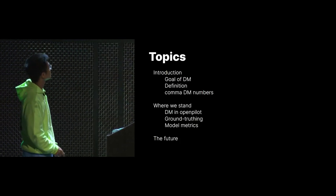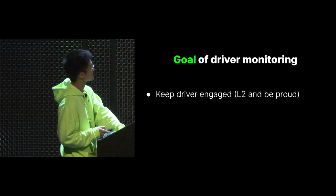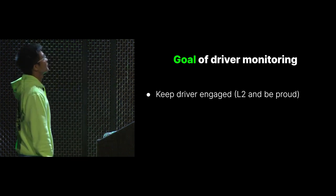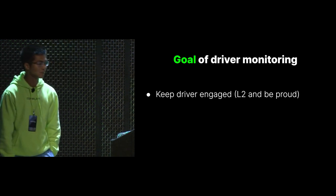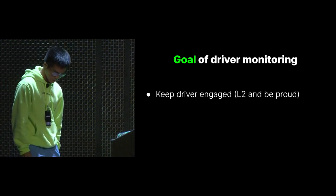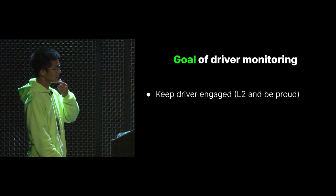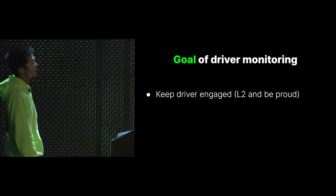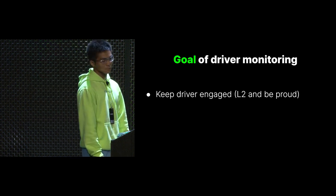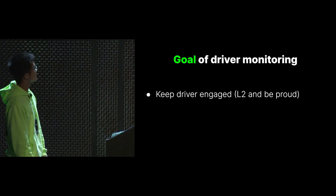Here are the topics I'd like to cover today to hopefully demystify Comma's camera-based DM approach. Let's start with the basics: what's the goal of DM? What are we trying to achieve with it? Comma is proud about shipping a very good Level 2 system, and as the system gets better and better, we need to remind people that they always need to pay attention. Therefore, the direct goal of DM is to keep the driver engaged.